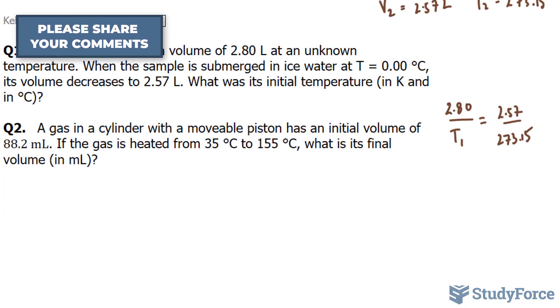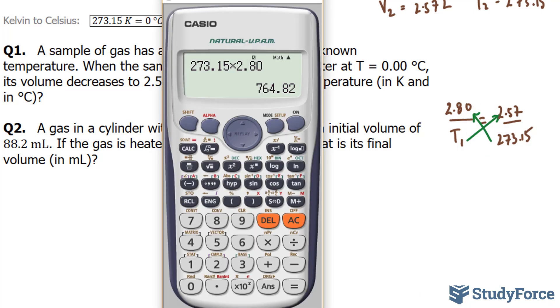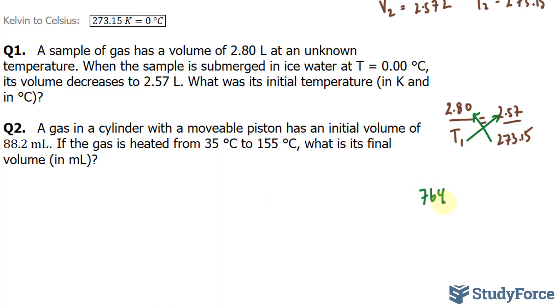Now, to find T1, we'll cross multiply. So, we'll take this variable, multiply it to 2.57, and take 273.15 and multiply it to 2.80. Let's use our calculator. 273.15 times 2.80 gives us 764.82, and T1 times 2.57 is T1 bracket 2.57.